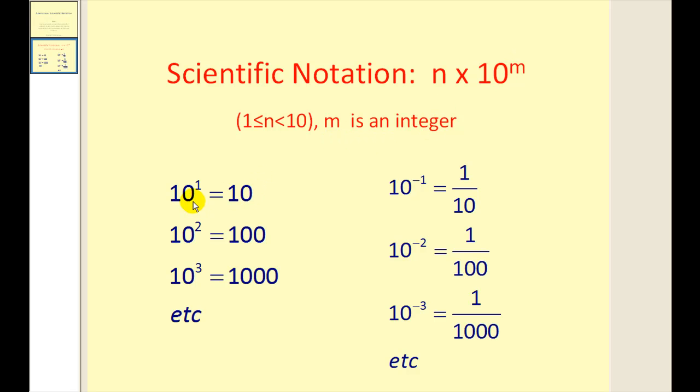What I want you to keep in mind is when we multiply n by ten to a positive power m, for example, ten to the first equals ten, ten to the second equals one hundred, ten to the third equals a thousand, the number is going to get larger when we multiply n by ten to a positive power.